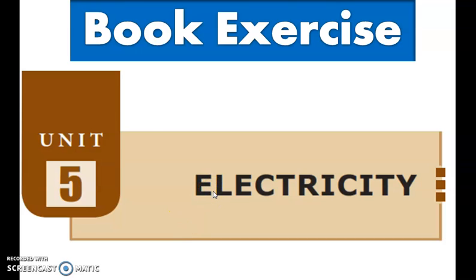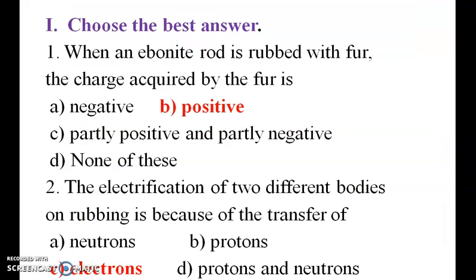Good morning students, today we are going to see the book exercises of electricity unit 5. Choose the best answer: When an ebonite rod is rubbed with fur, the charge acquired by the fur is positive.